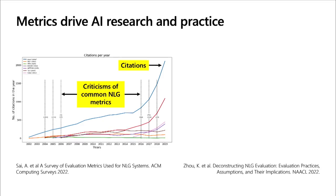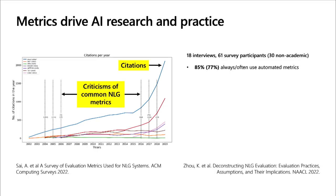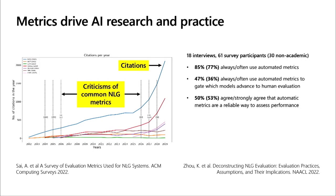These metrics translate to industry. An interview study and survey of 61 practitioners found that 85% of teams use automated metrics similar to BLEU to evaluate their AI systems; 47% of the time these metrics gate what gets deployed or advances to A/B testing; and 50% agree these metrics are a reliable way to assess performance — which can be problematic.